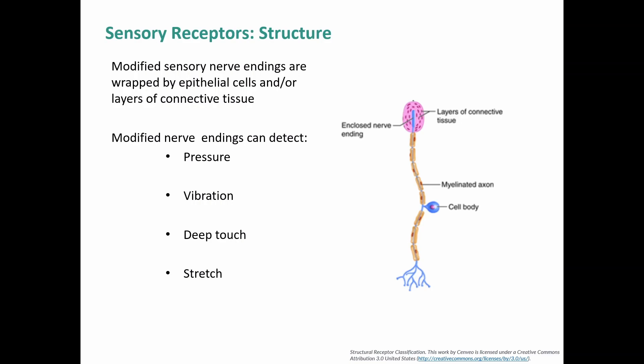Some sensory nerve endings are modified, either because they've been wrapped with epithelial cells or have layers of connective tissue around them. These encapsulated dendrites are used for various general senses including pressure, deep touch, vibration, and stretch. Many of these are utilized for the general senses associated with touch, like pressure and vibration.